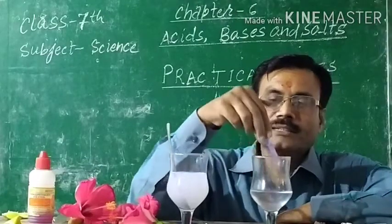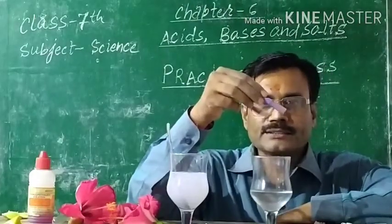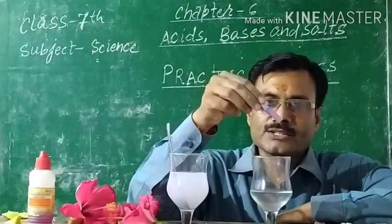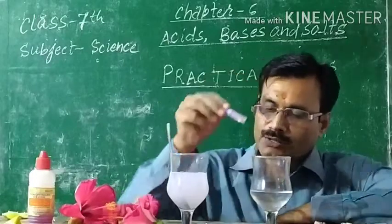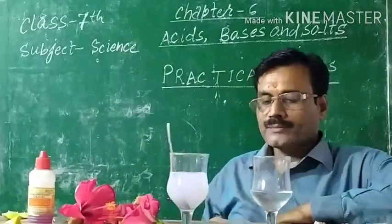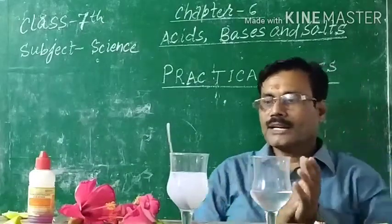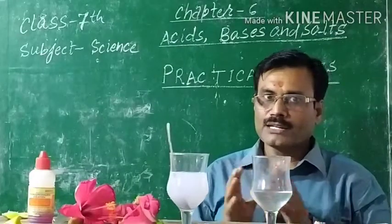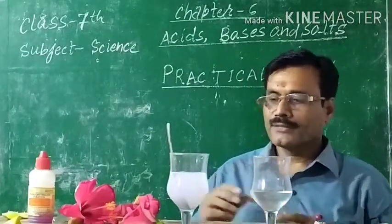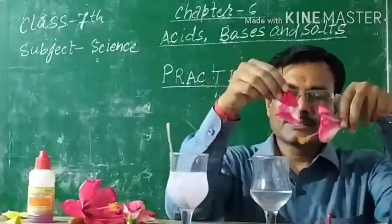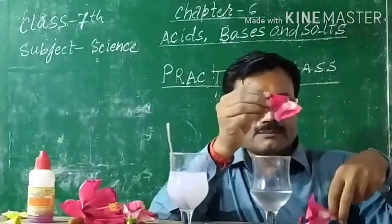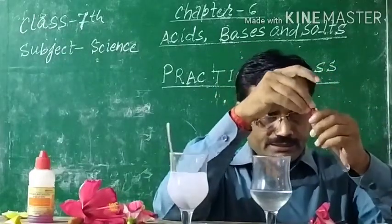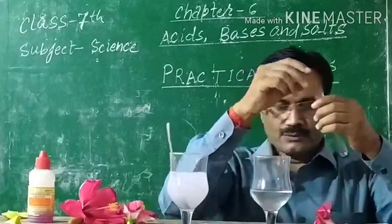Now it is very clear that blue litmus paper changes into red in acid. Students, you can see that with red litmus paper we have already demonstrated. Now, students, you can see that I have China rose petals which I have put in a test tube.